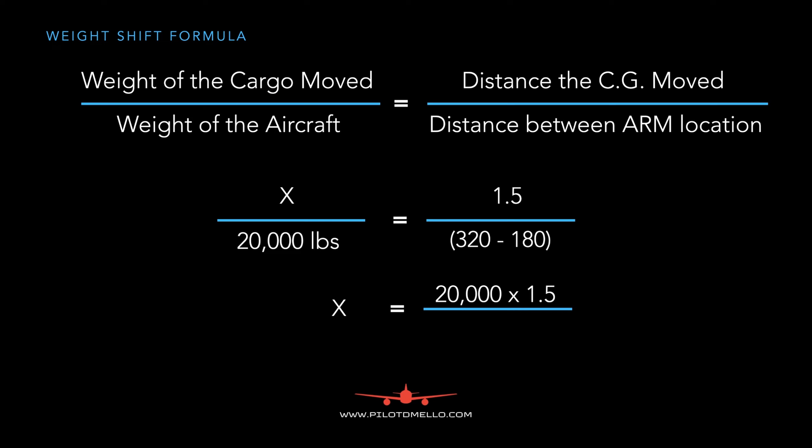Using simple cross multiplication, we get X equals 20,000 times 1.5 divided by 140 inches. Plugging into our calculator, we get X equals 214 pounds. That's the weight we need to move to get the aircraft within limits.